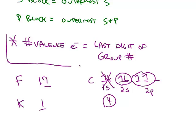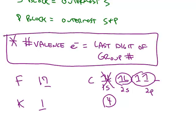A shortcut, instead of writing out the orbital diagram, is just look at the periodic table and find the group number. Carbon is in group number 14. The last digit gives you the number of valence electrons.